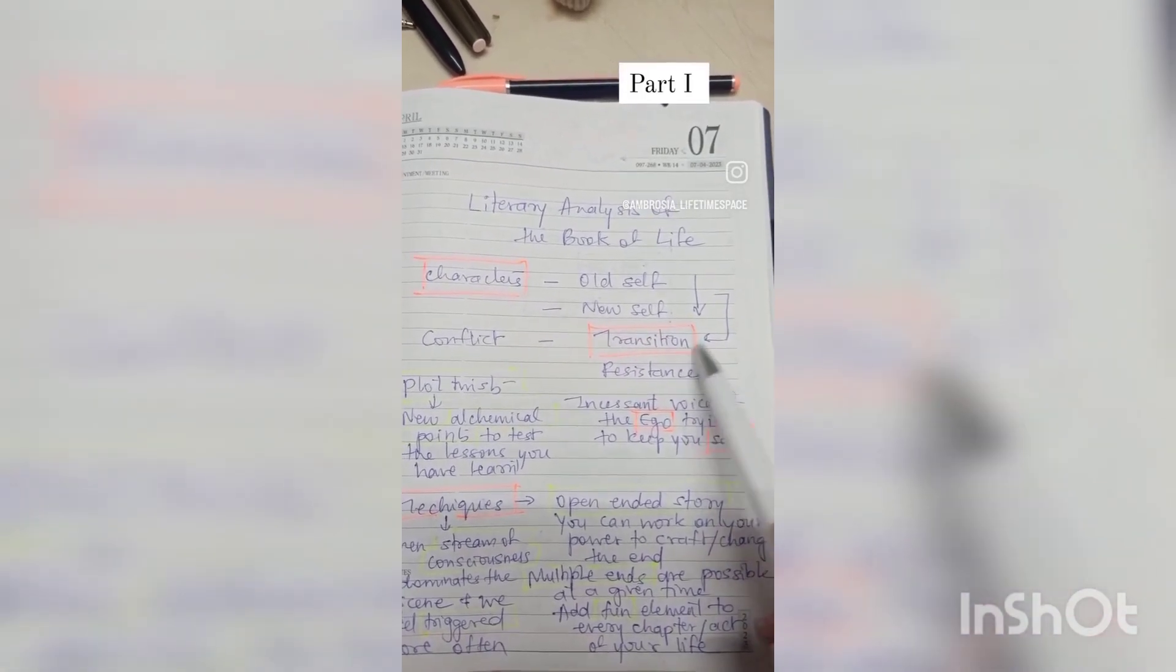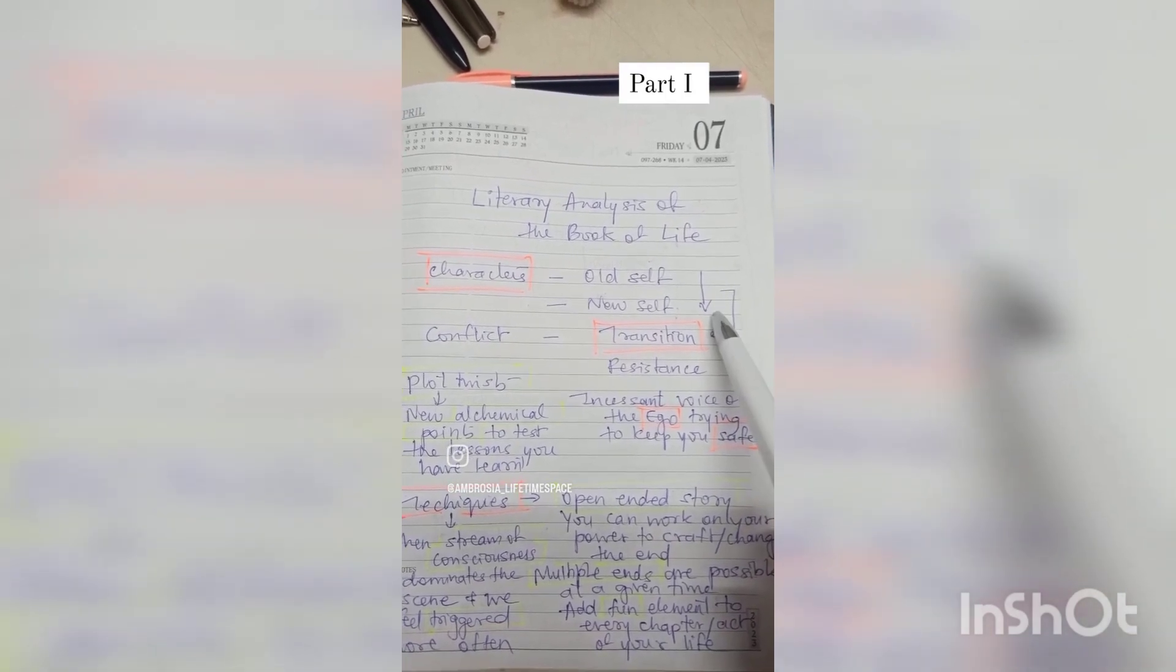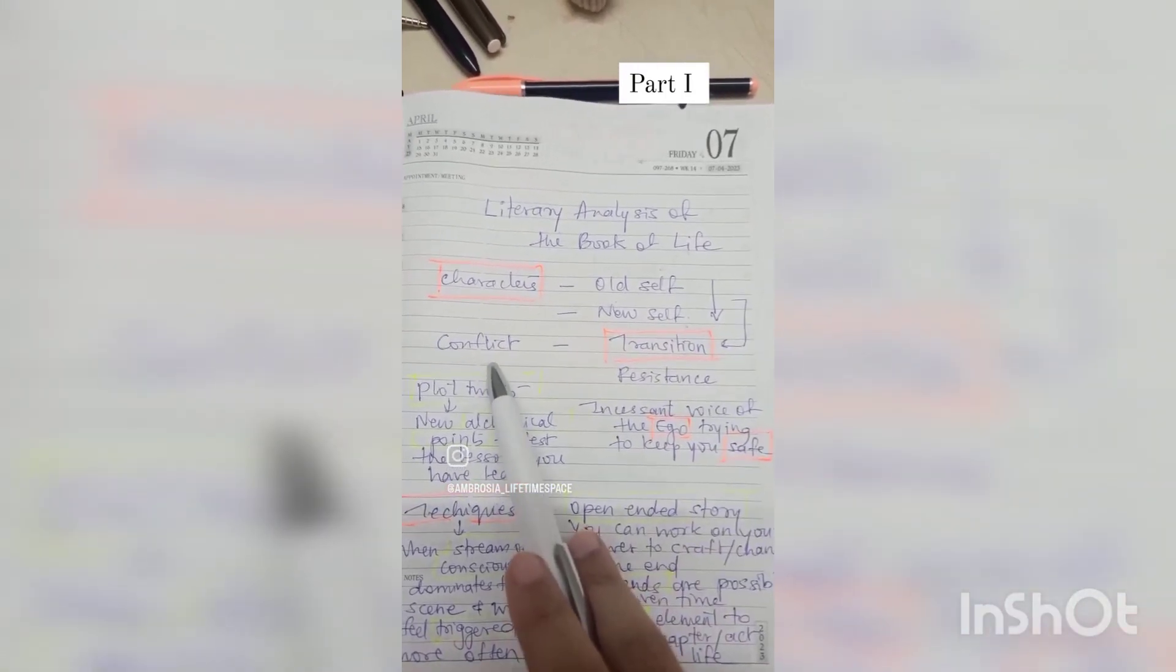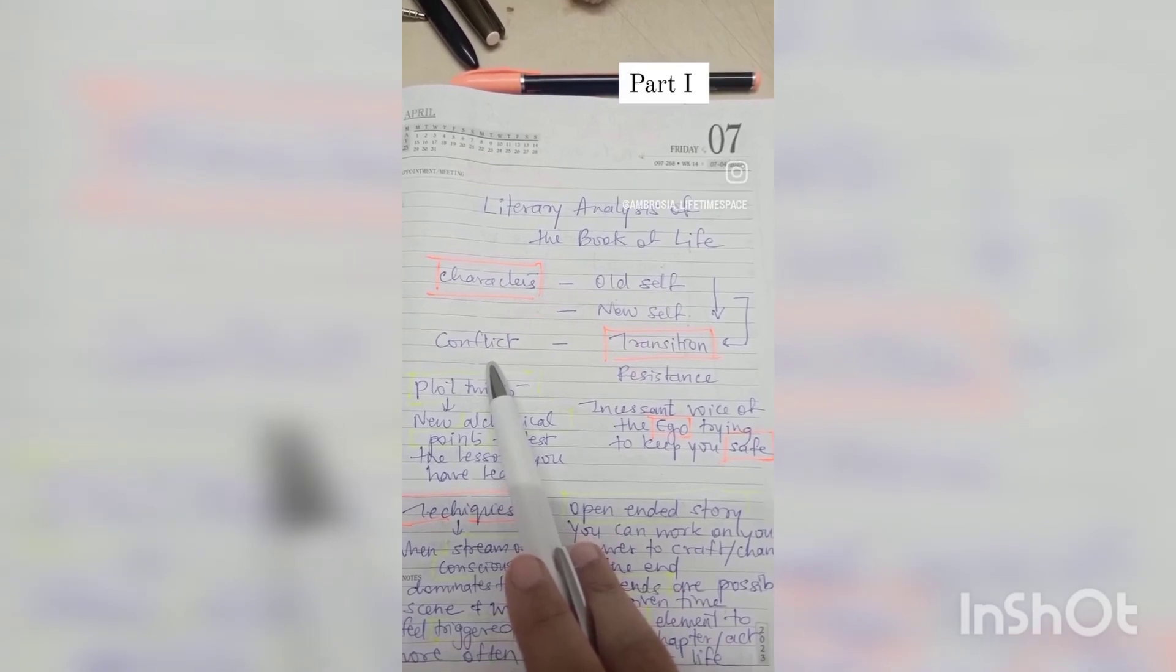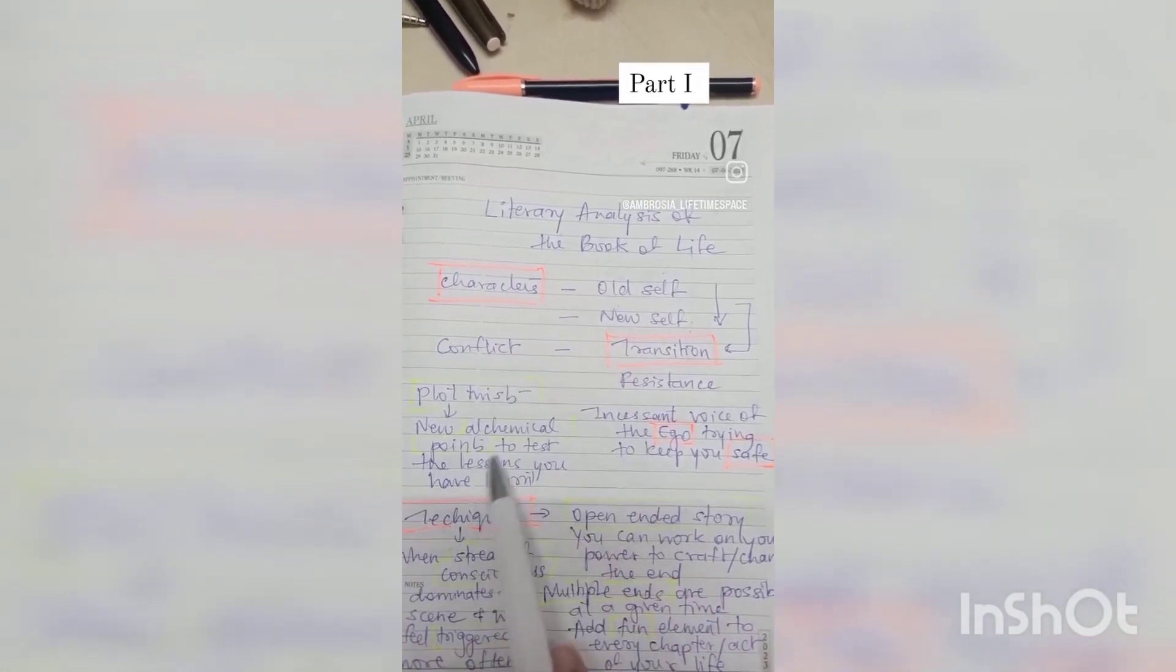Then, the transition from the old self, from the safety of the old self to the uncertainty of the new self creates major conflict. The resistance adds to the conflict.